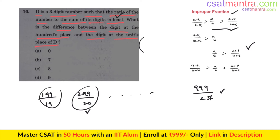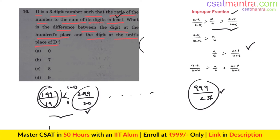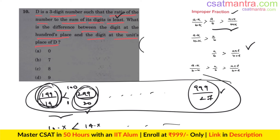We get nine such minimum values up to 999: 199/19, 299/29, ..., 999/99. Comparing 199/19 ≈ 10.47 versus 299/29 ≈ 10.31 — wait, 199/19 is around 10.5 and 300/20 = 15, so 199/19 is smaller. The numerator jumps by 100 while denominator increases by only 1 each time, so 199/19 is the overall least ratio. Therefore D = 199, and the difference between the hundreds digit and units digit is 9 − 1 = 8. Answer: C.